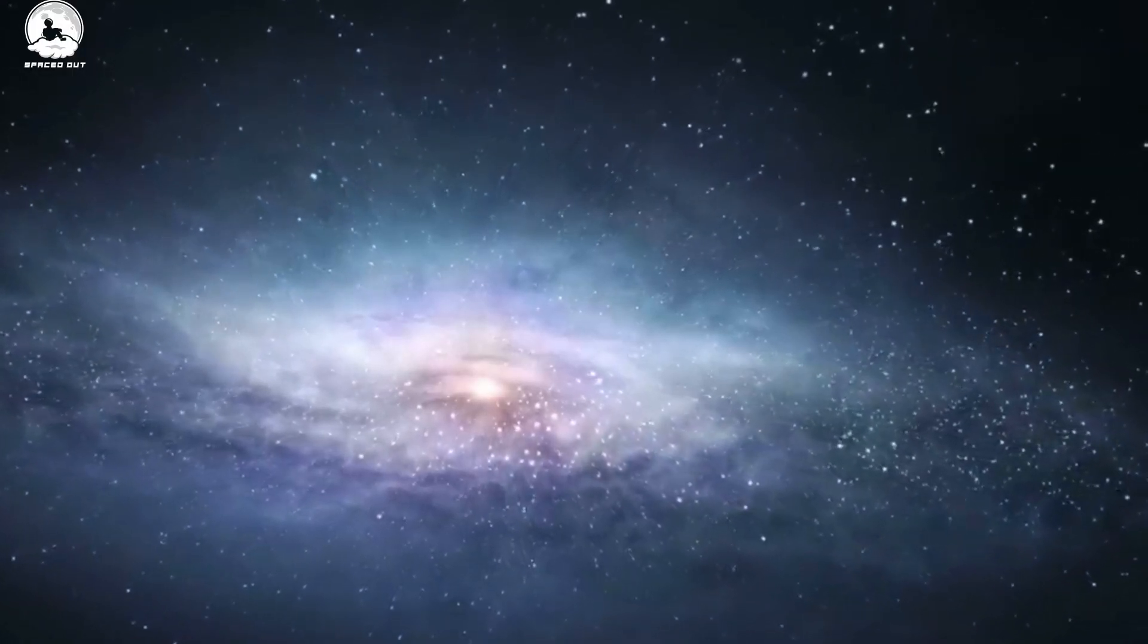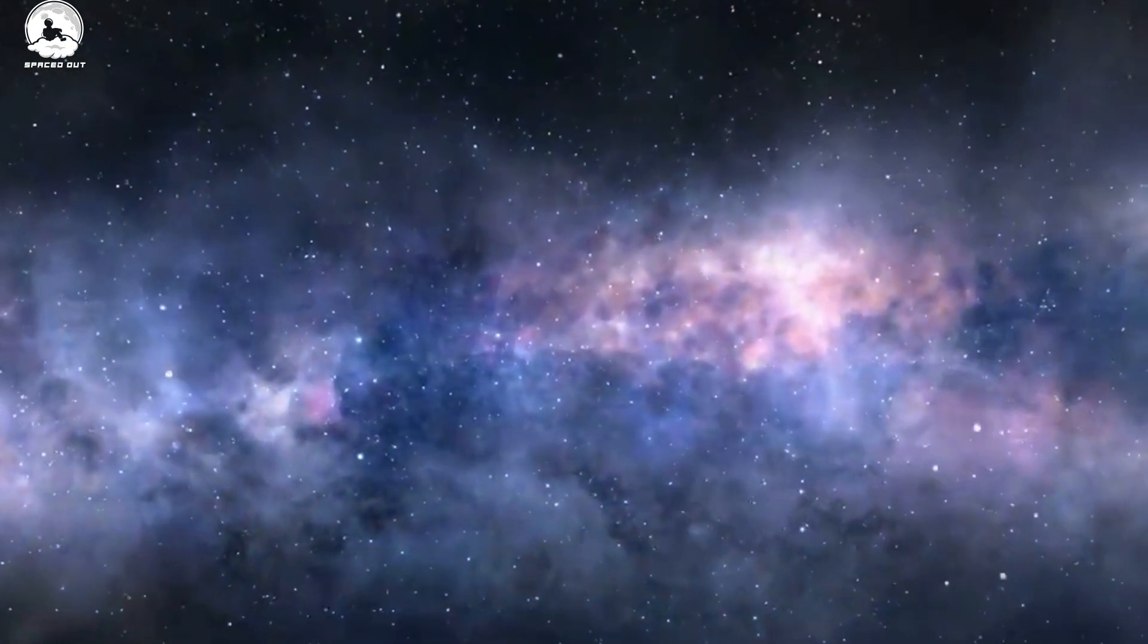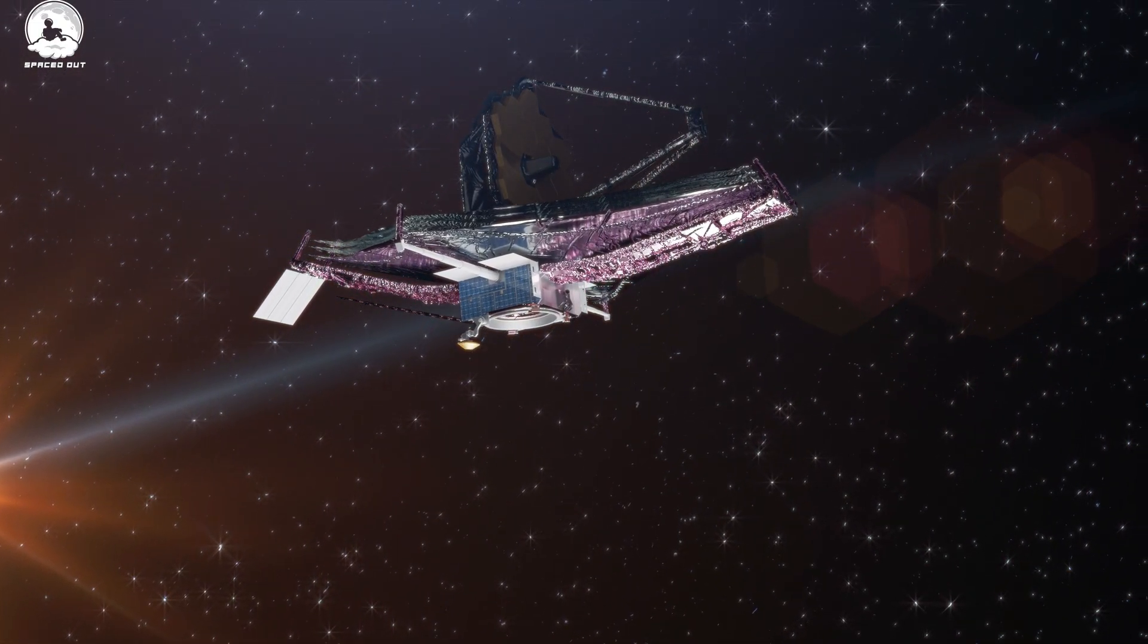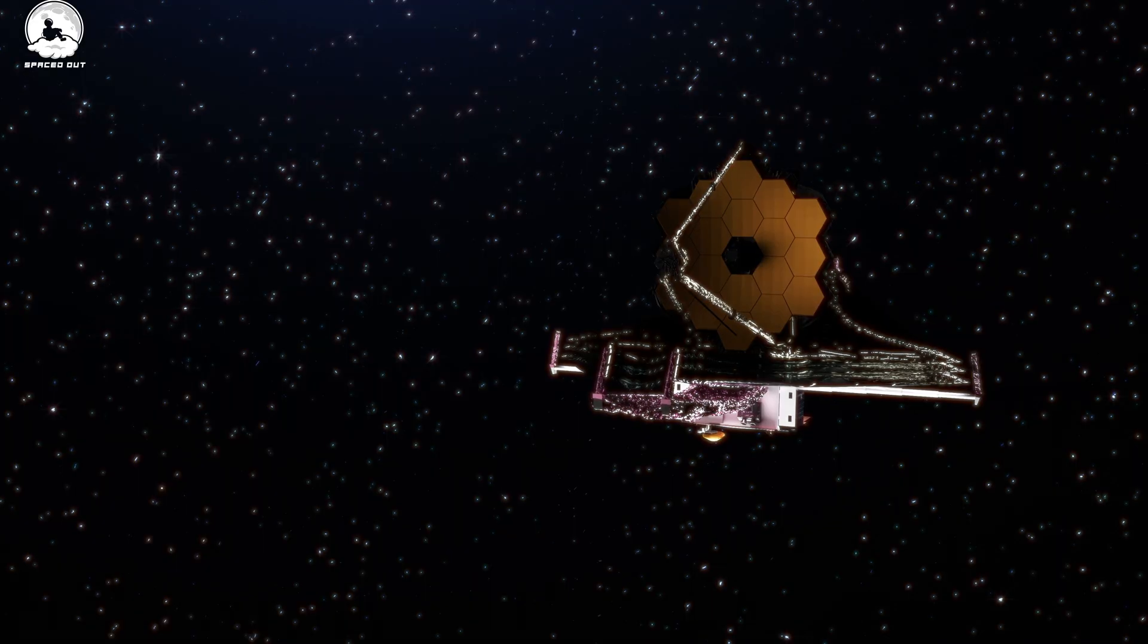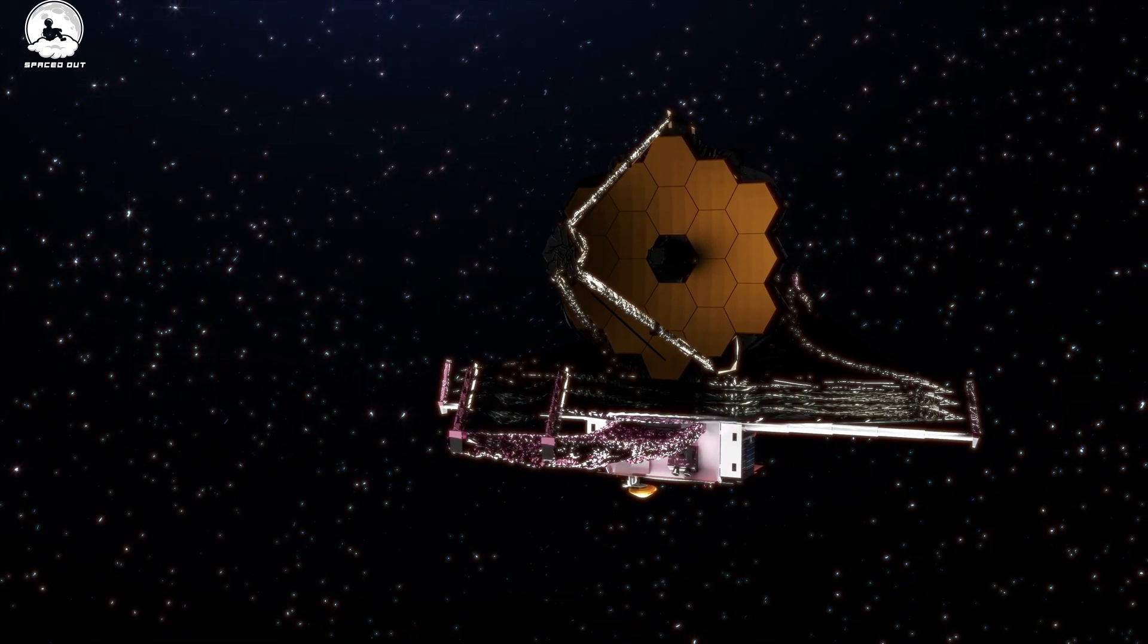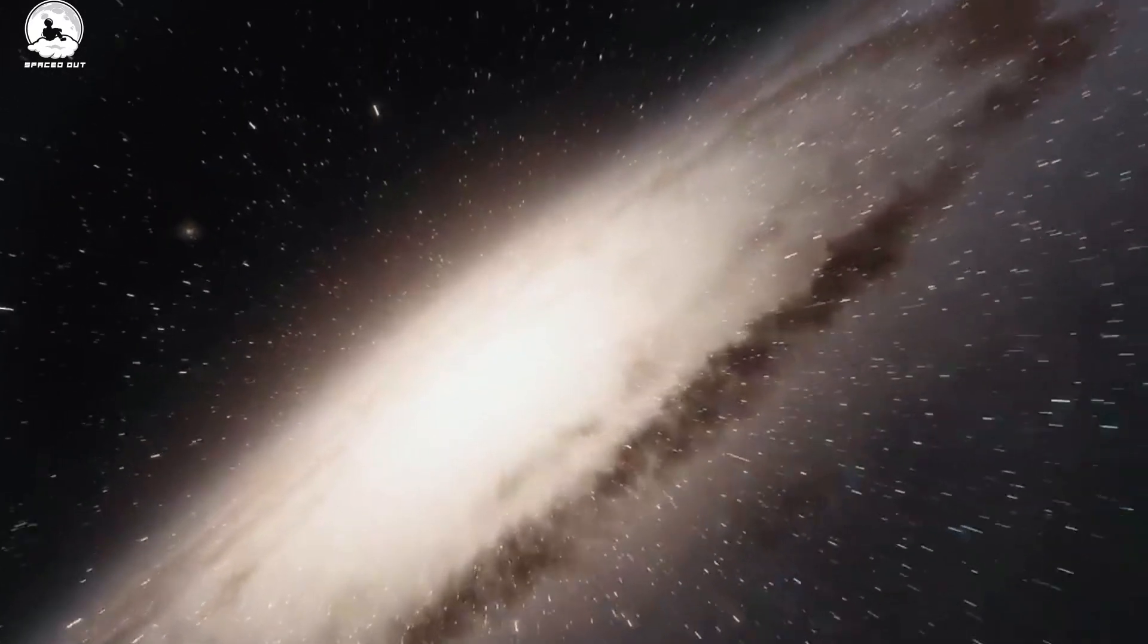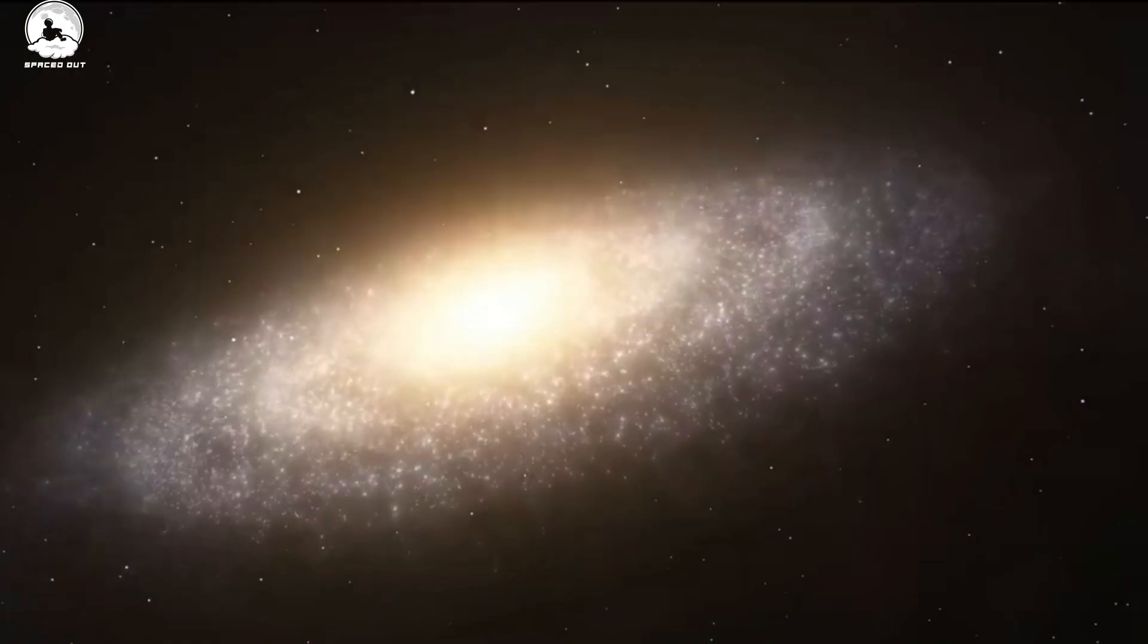But how do we know all this? How can we predict events that are set to occur millions of years in the future? Enter modern technology. Instruments like the James Webb telescope have revolutionized our understanding of the cosmos. Positioned far from Earth's distorting atmosphere, this marvel of engineering peers deep into space, capturing images and data with unparalleled clarity. It's through such advanced observatories that we've been able to monitor the slow approach of Andromeda, gaining insights into the mechanics of the impending merger.